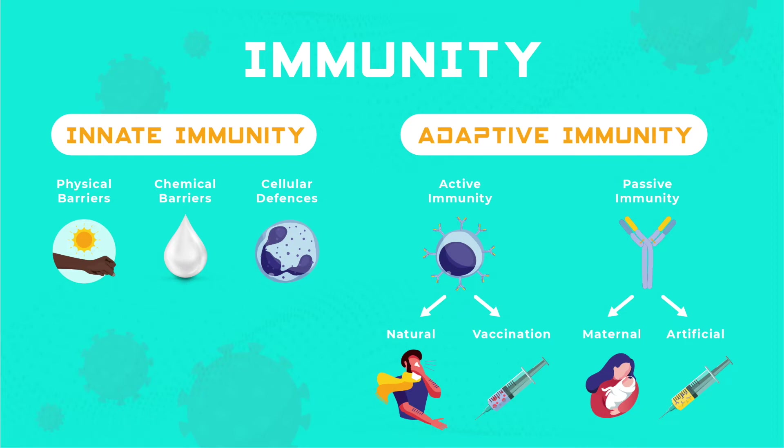Our immune system could be thought of as two main parts: adaptive and innate immunity. These two parts work closely together on different tasks to protect us from getting sick. So, what is innate immunity?